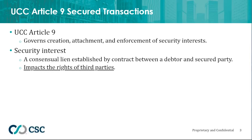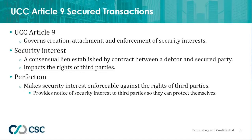Perfection simply means giving notice to the world of the security interest so that third parties have a place to look and can see that the debtor's assets are already encumbered, and then take that into account before entering into a transaction with the debtor. Perfection makes the security interest enforceable against third parties. The security interest is enforceable between debtor and secured party as a contract, but the courts won't enforce it if third parties are involved — and there are always third parties involved. The difference between perfection and non-perfection can mean the difference between collecting everything owed and collecting nothing.